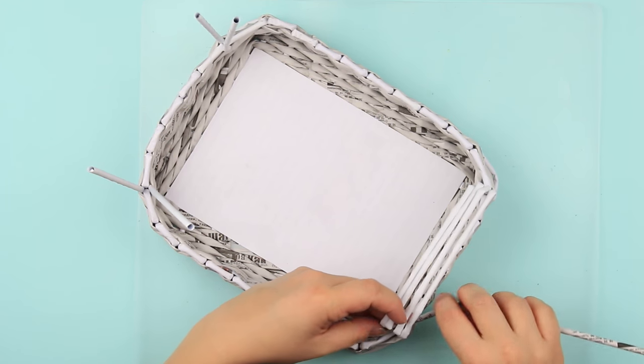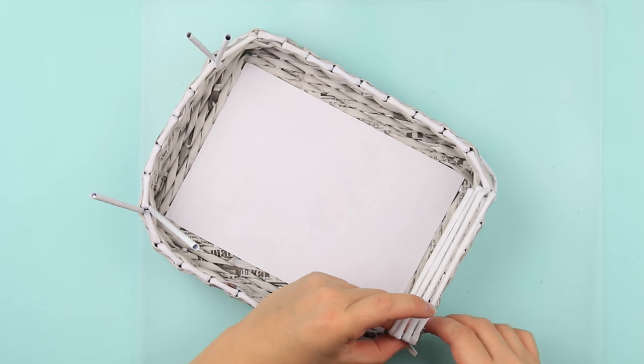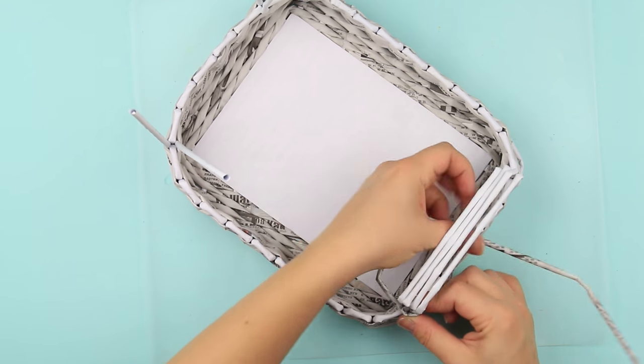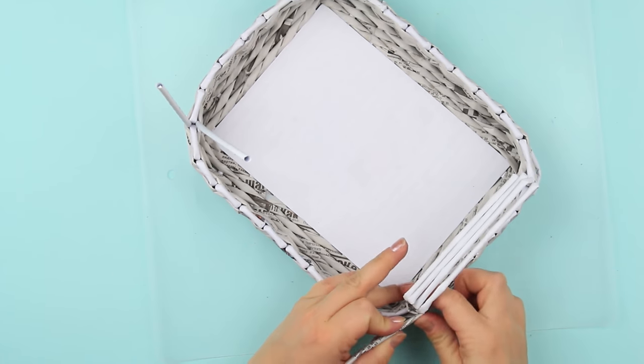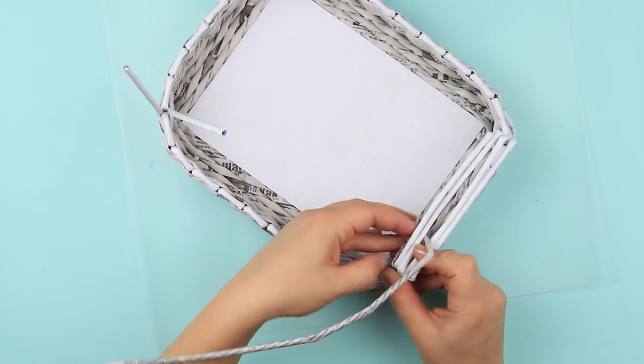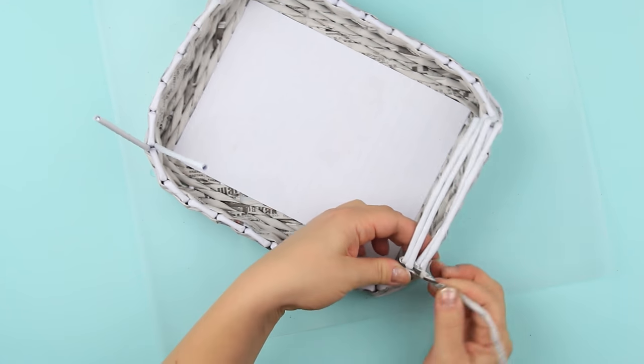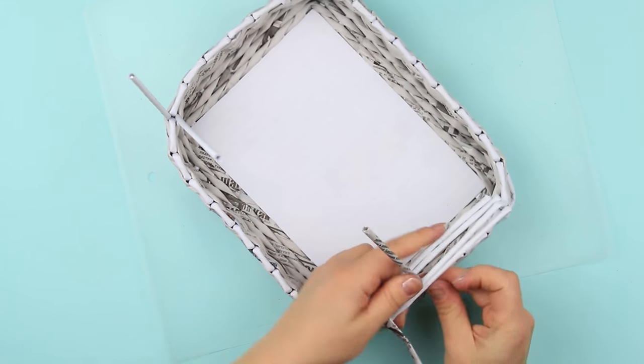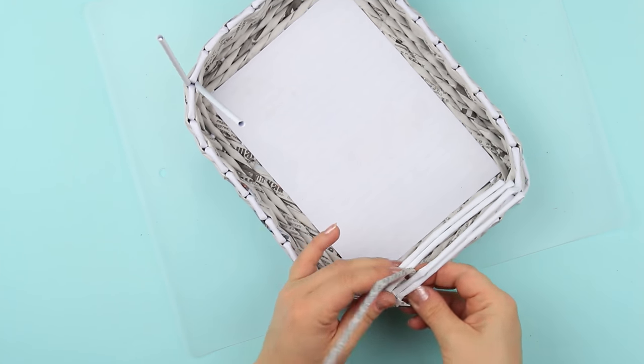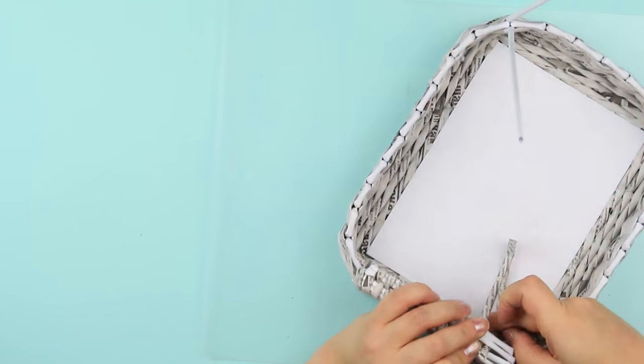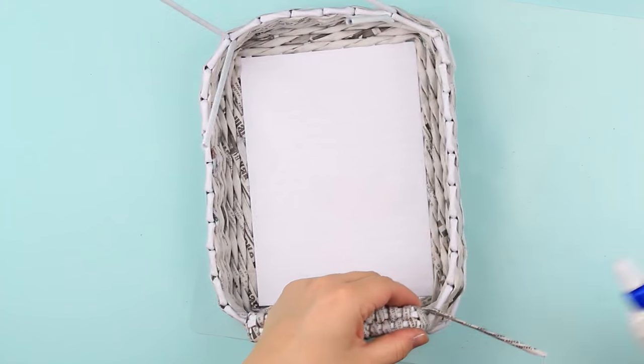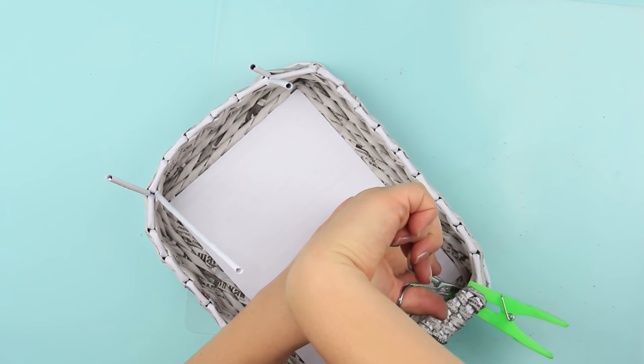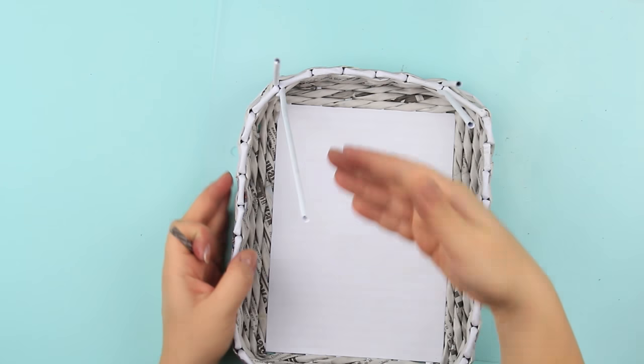Wrap the handle tightly with a newspaper tube. Then weave around each pair. Secure the tube end. Repeat for the other handle.